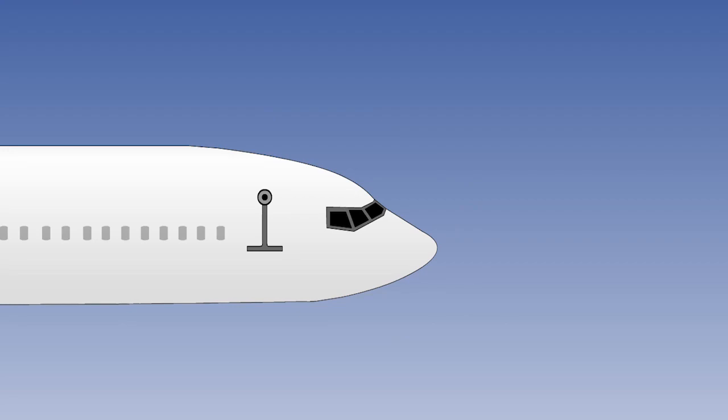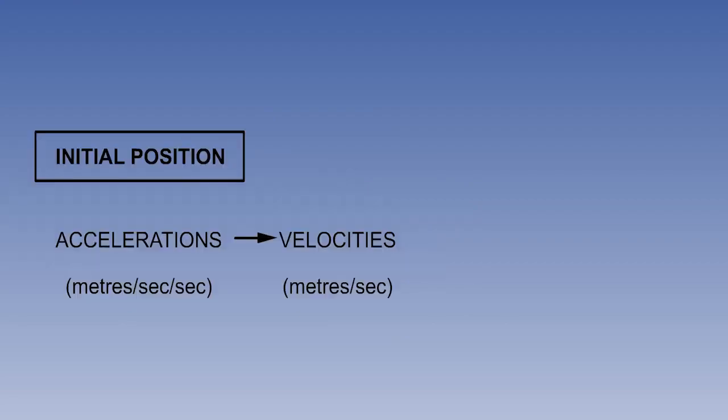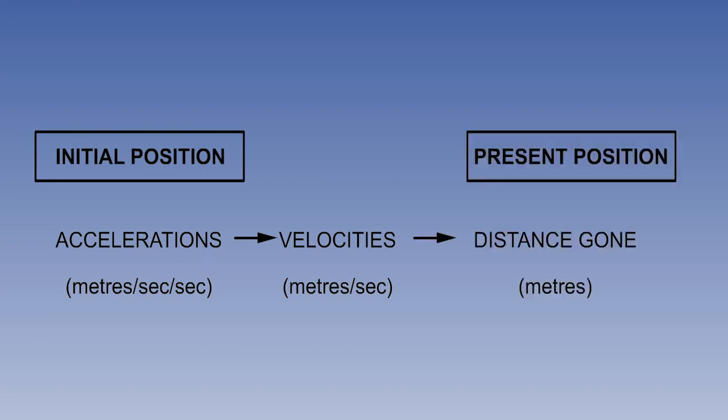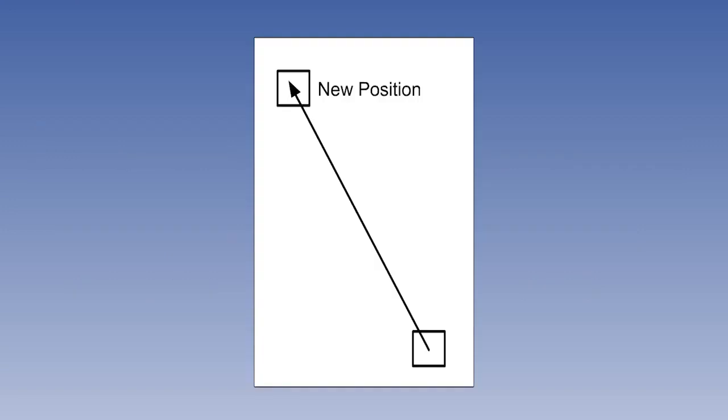Accelerometers measure accelerations, which are integrated first into velocities, then into distance gone. By knowing where we were when we started and adding up how far we've gone, we can work out where we are now.